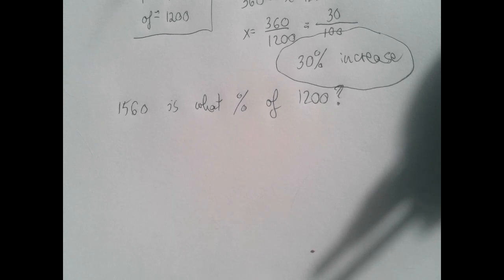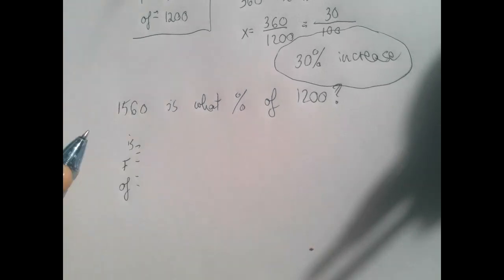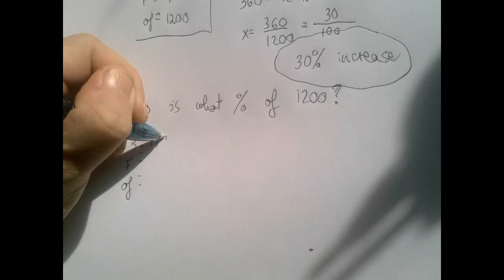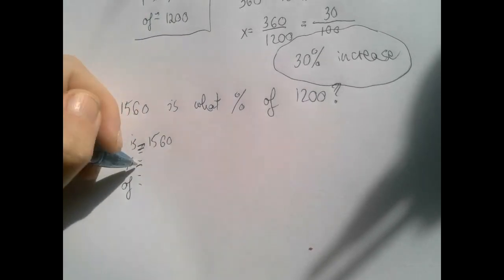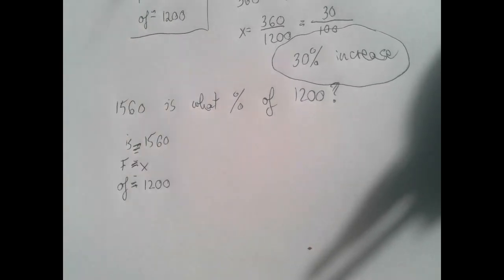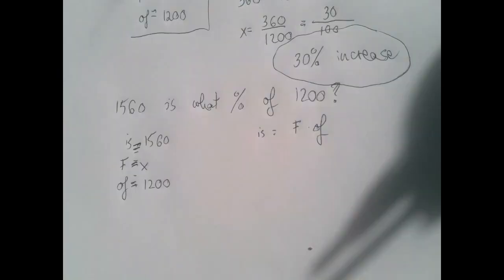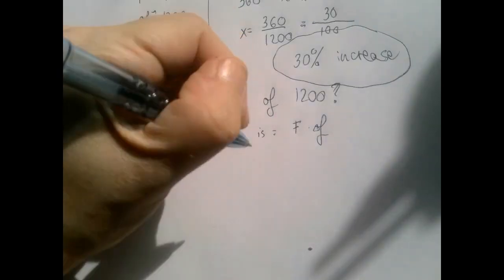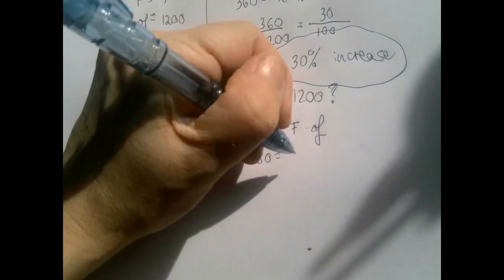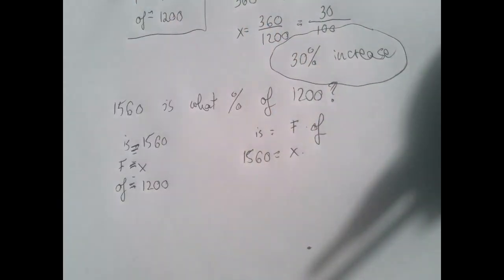So this is, again, a type 2 problem where 'is' is 1560. The fraction is, again, x. And the 'of' is 1200. So then, 'is' is fraction times 'of' will become: 1560, the fraction is x, and the 'of' number is 1200.